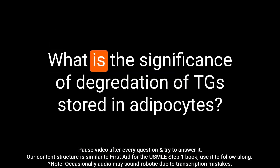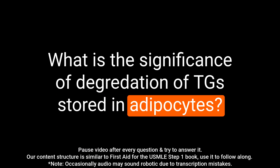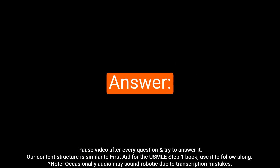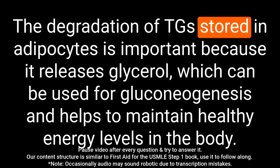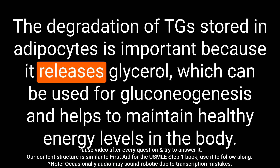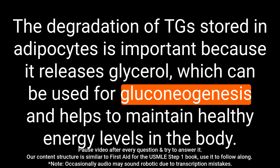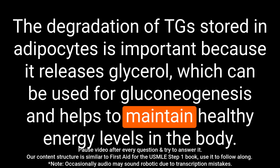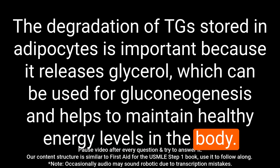Question: What is the significance of degradation of TGs stored in adipocytes? Answer: The degradation of TGs stored in adipocytes is important because it releases glycerol, which can be used for gluconeogenesis and helps to maintain healthy energy levels in the body.